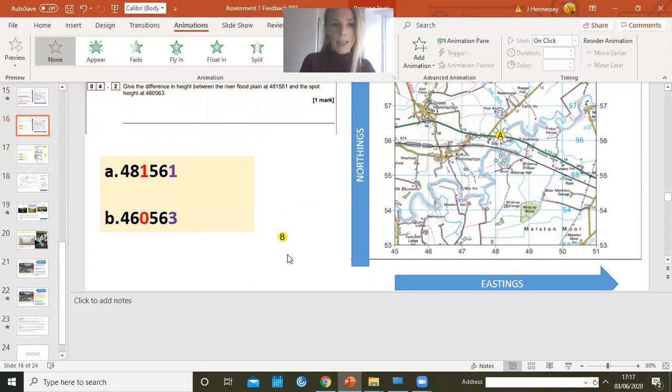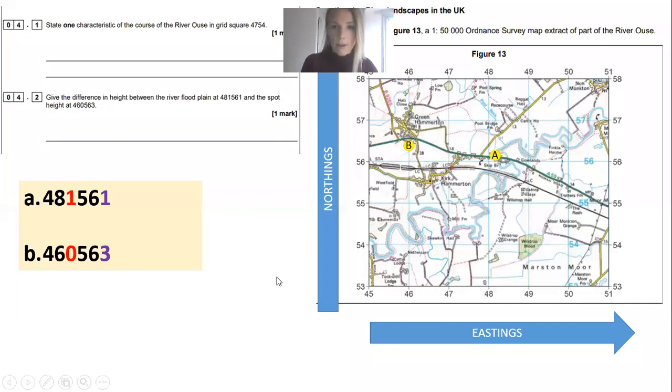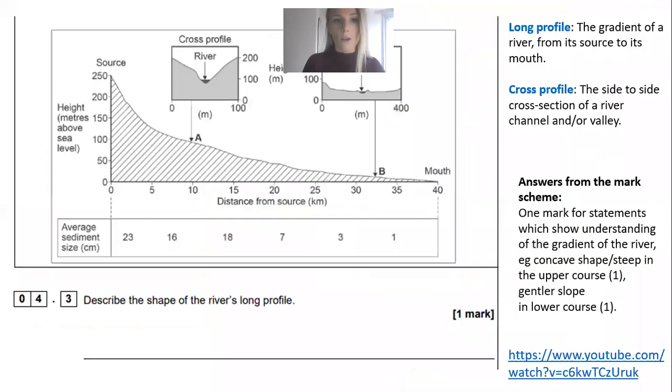Let's have a look at B. We need to go to 460563, so we go across to 46 and stop—we don't go any further because the number after 46 is zero, meaning the feature is on that line. We then need to go 563, so up the stairs to 56 and then three tenths up. You can probably guess where we go—to that triangulation pillar which is 46. A is the top one, B is the bottom one. You need to give the difference in height between those two points, so quite simply take the smaller value away from the large value and the answer is 32.